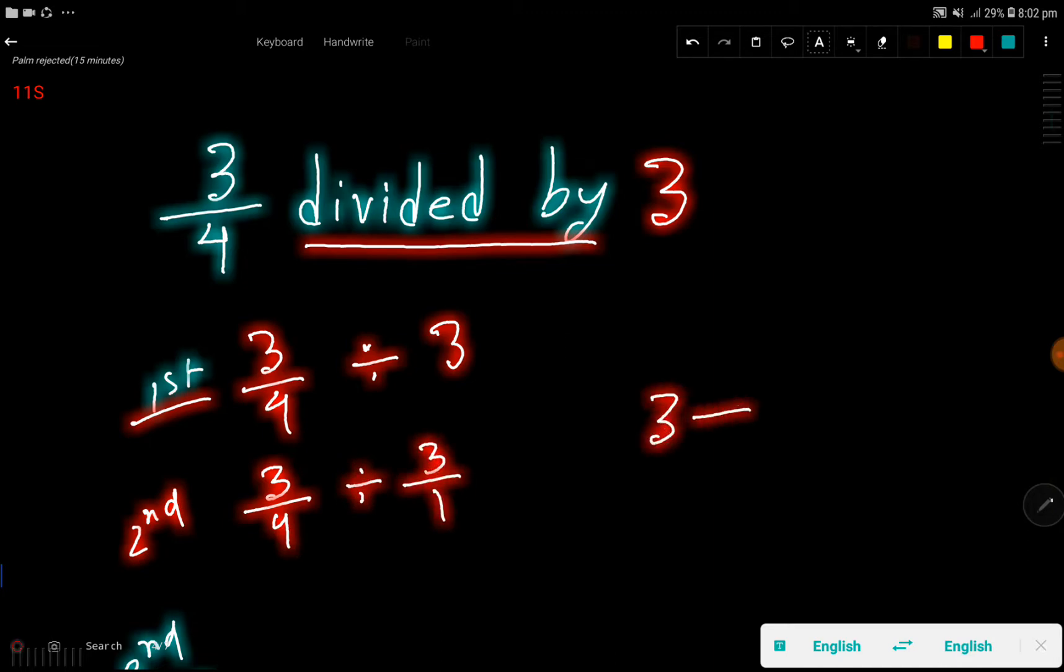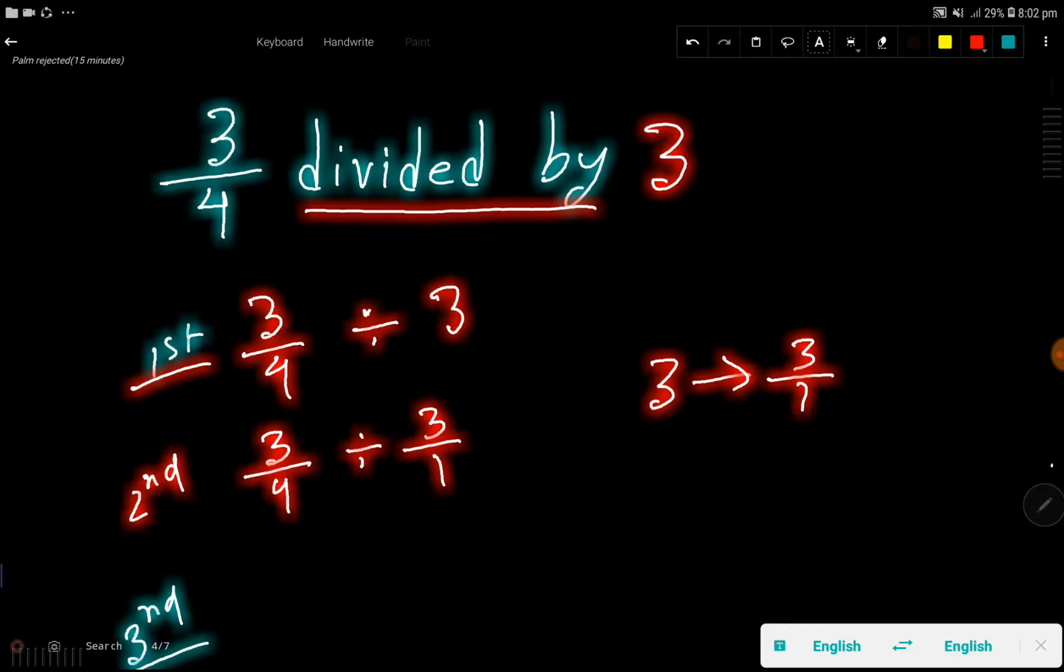We can rewrite 3 as 3 over 1. Then look, what do you mean by division? Division means multiplication by the reciprocal of the second fraction, right? So the reciprocal of 3 over 1 equals 1 over 3.